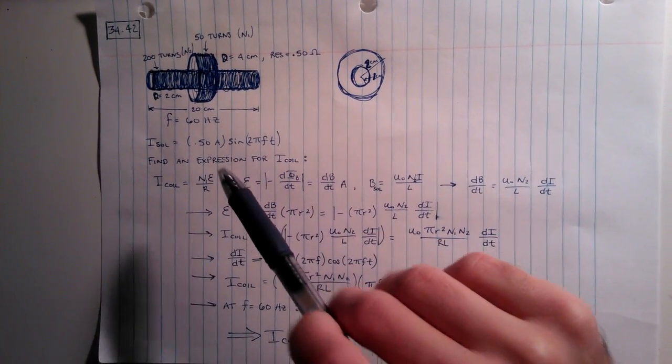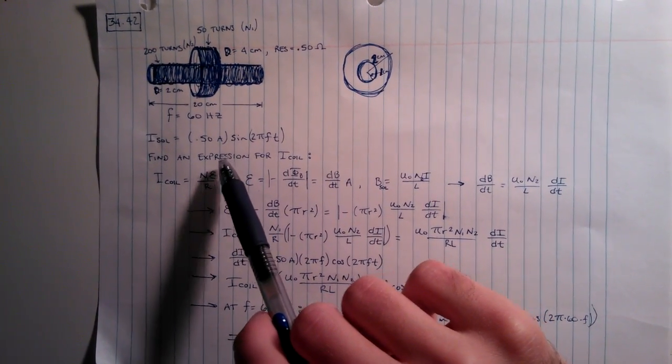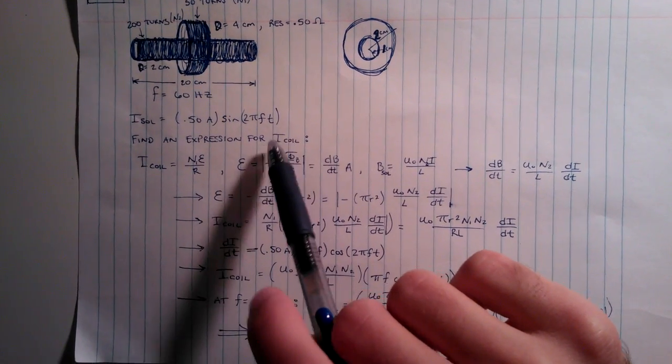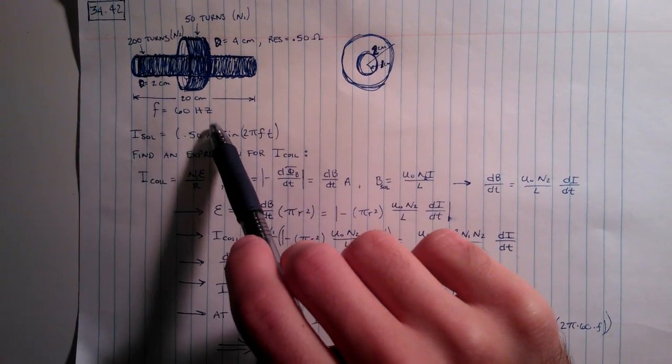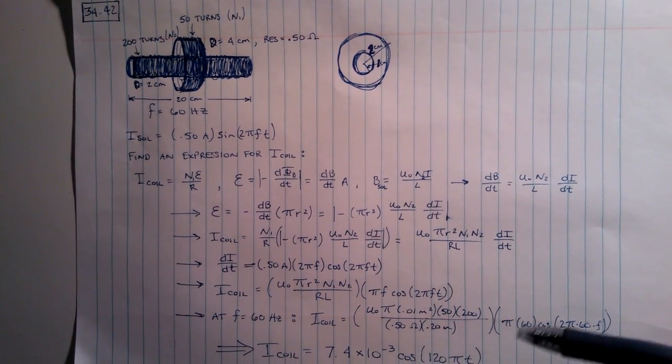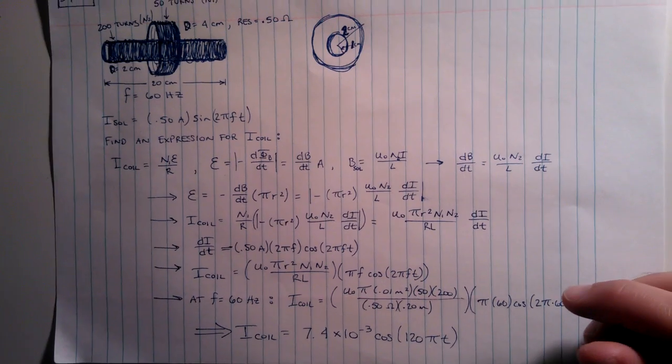You're given the current of the solenoid. It's given an expression which is 0.5 amps times sine of 2πft where f is the frequency and it's given that you have a frequency of 60 Hertz. What you need to do is find an expression for the induced current in the coil.